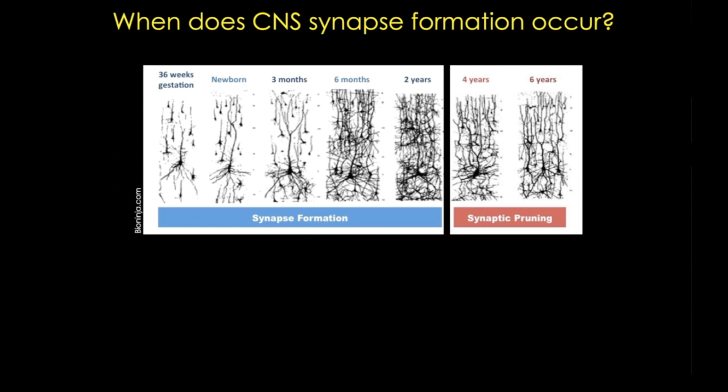Synaptic pruning is really critical. It's critical in development to reinforce learning and behavior, but it's also central to how we learn as adults as well. And glial cells are known to be important for this process.